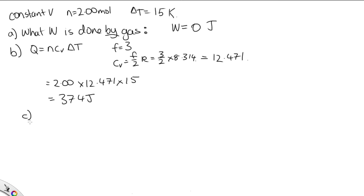Part C asks what is the change in internal energy? Well, we can just use the first law. The change in internal energy is equal to the heat added plus the work done on the gas. The work done is 0, so this is just equal to the heat added, which is 374 joules.